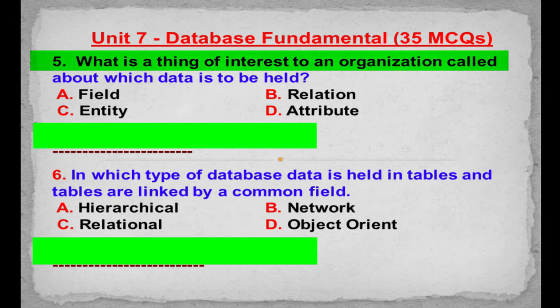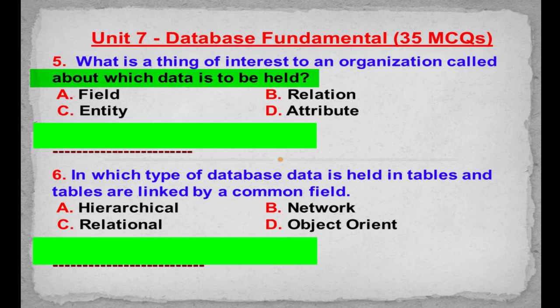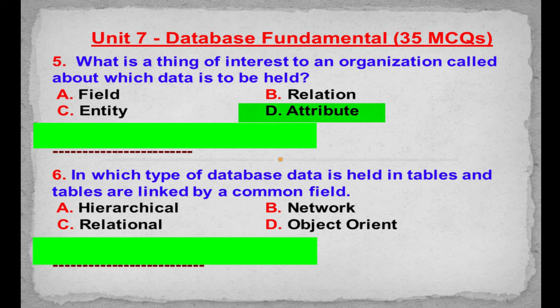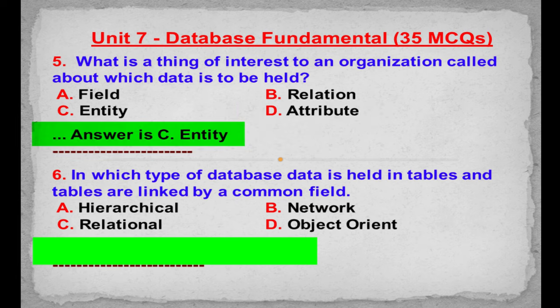MCQ number 5: What is a thing of interest to an organization called, about which data is to be held? Option A: Field. Option B: Relation. Option C: Entity. Option D: Attribute. Correct answer is Option C: Entity.